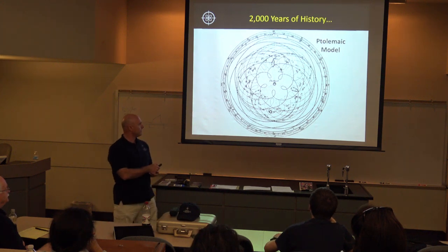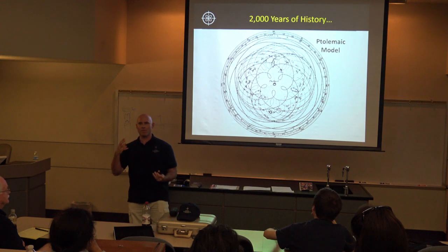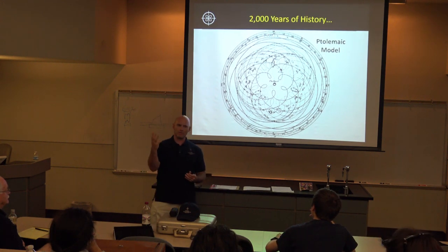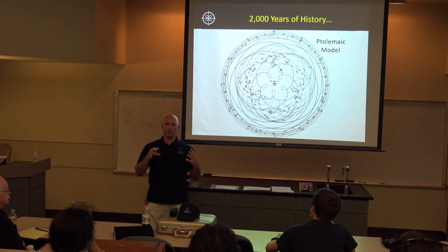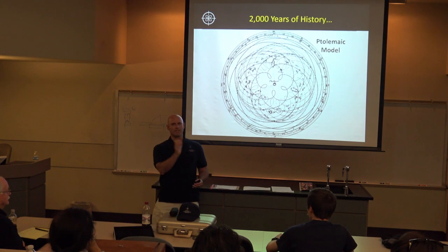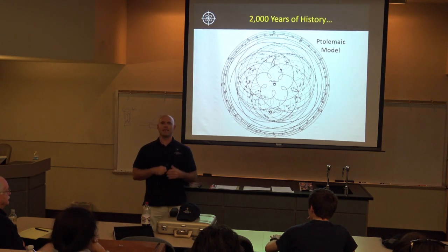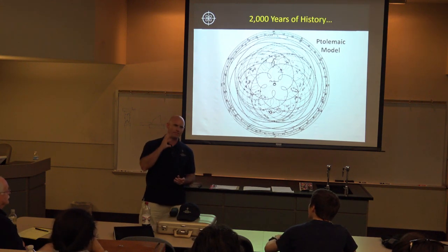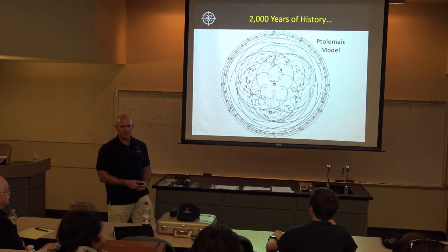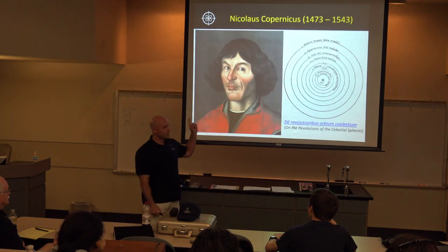When you place the earth fixed and unmoving at the center of the universe — which is the commonsense view, because we don't sense we're on a moving earth and we don't see stellar parallax — the earth was just seen as too big to move. You can move a rock, you can move a boulder, but as a boulder gets bigger it has more earth in it and is harder to move, until you get to a mountain, which is impossible to move. So the earth was fixed and unmoving at the center of the universe.